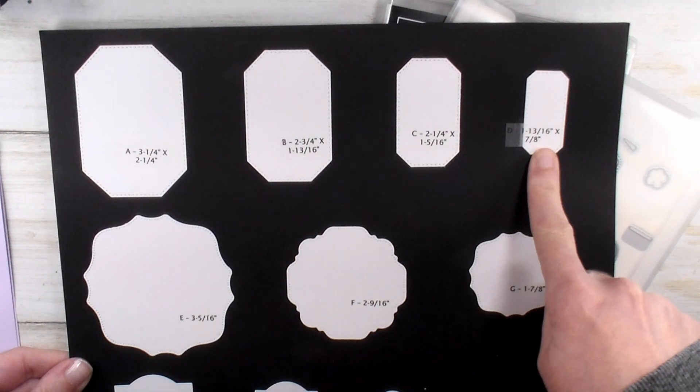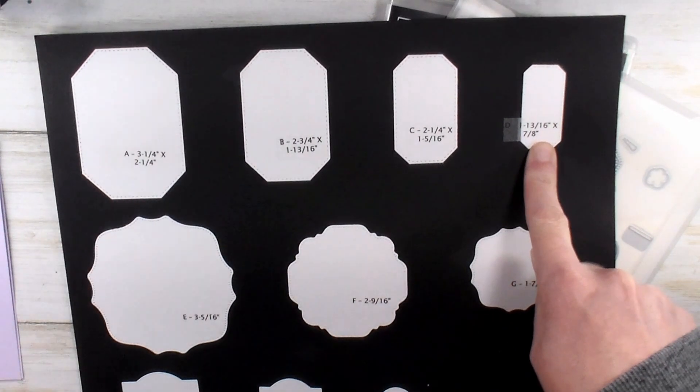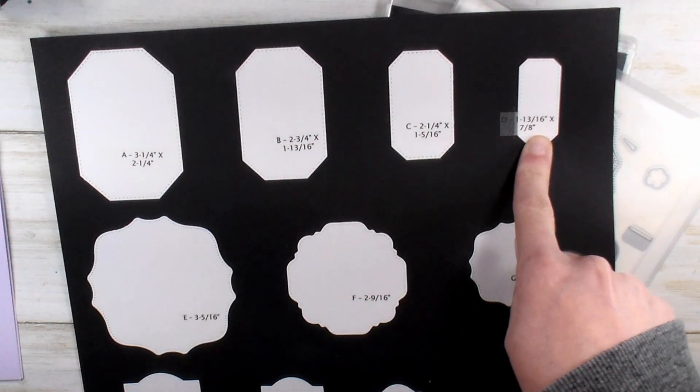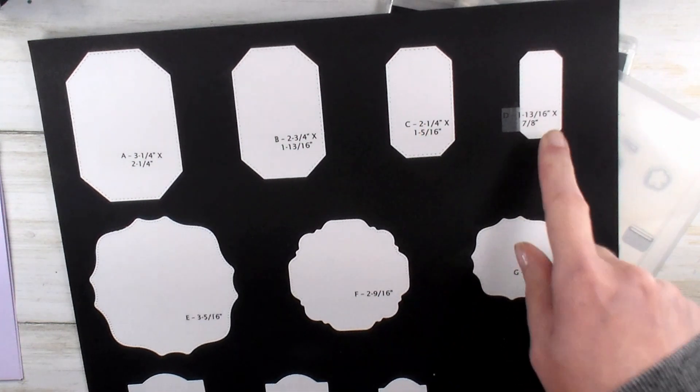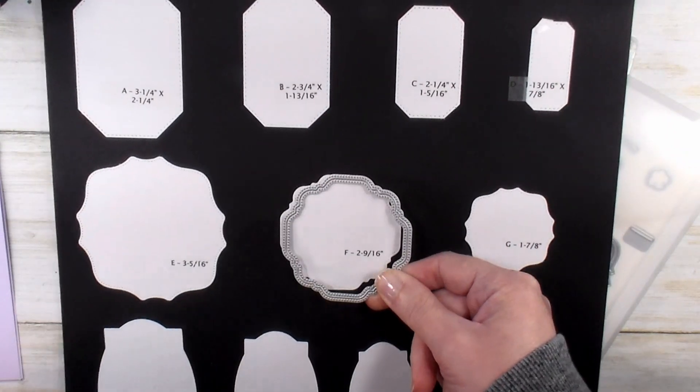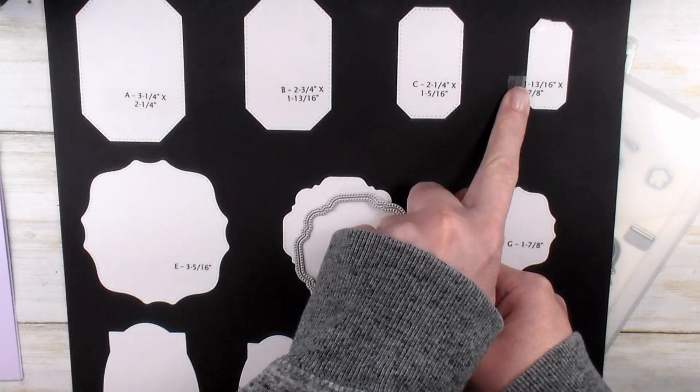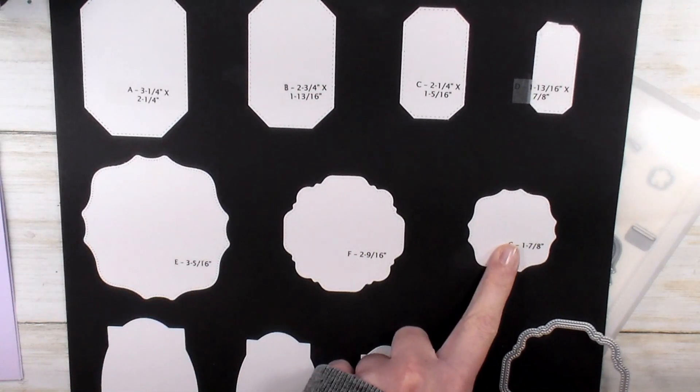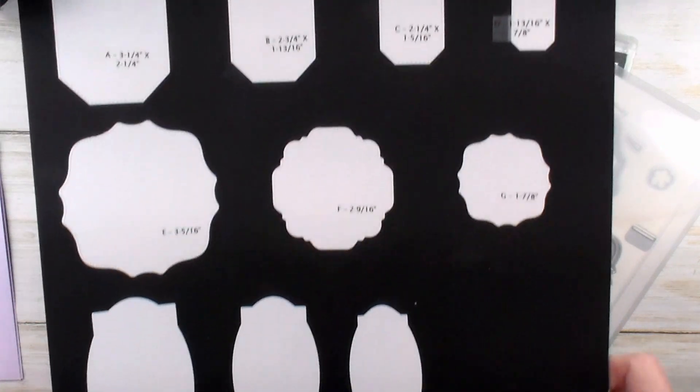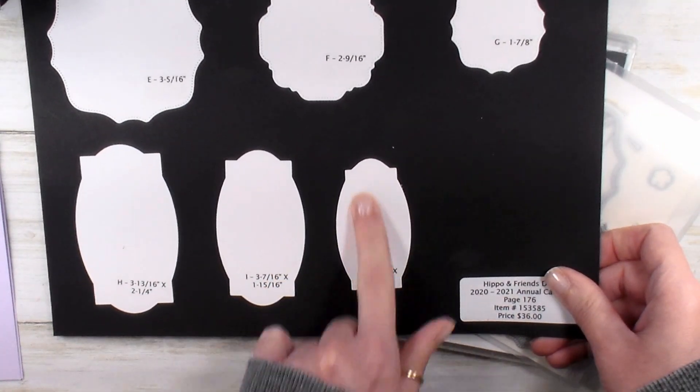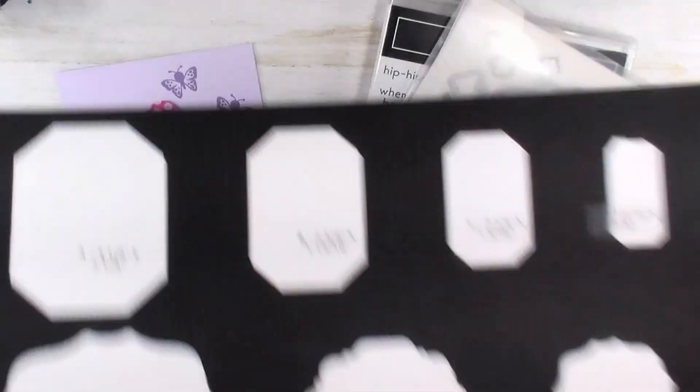So this is the Hippo and Friends dies. They include little dies to cut out your stamped image, like our little U, but also these amazing labels. So here's the swoopy square that we're going to use today. There's four nested rectangles with clipped corners, three nested swoopy squares, and three nested rectangle ovals.